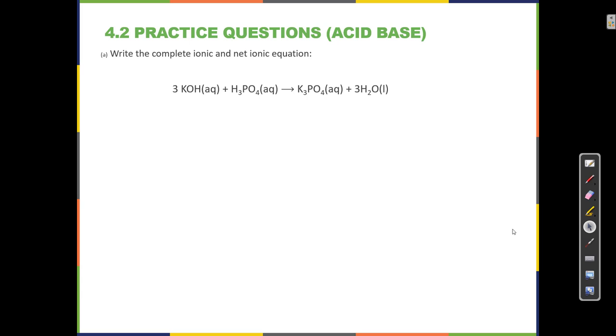Write the complete ionic and net ionic equation. So we have 3KOH. That means I have 3K+ and 3OH-. I have 3H+ on this phosphoric acid, plus 1PO4³⁻.